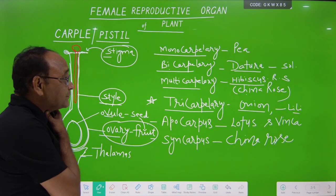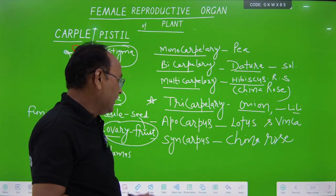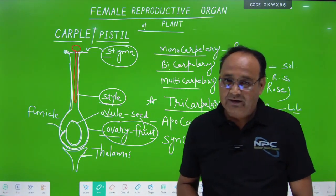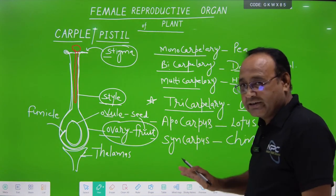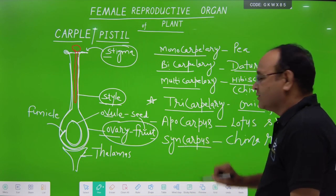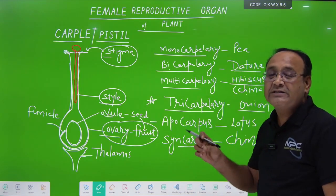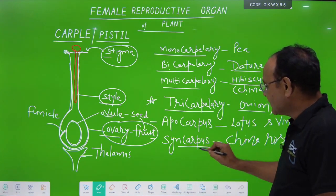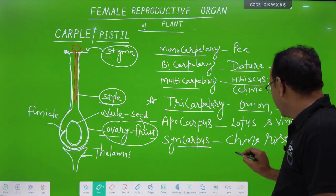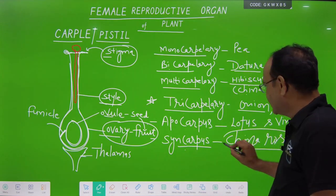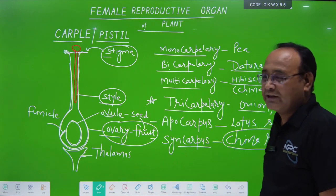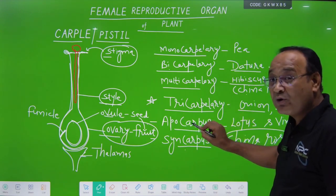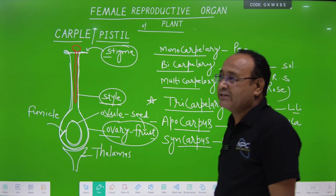If carpels are many, there are two possibilities: they are united or not united. If they are united, this condition is known as syncarpus — many carpels are present in the flower and all are united to each other. This is found in China rose. If carpels are not united to each other, this condition is known as apocarpus, and it is present in lotus.